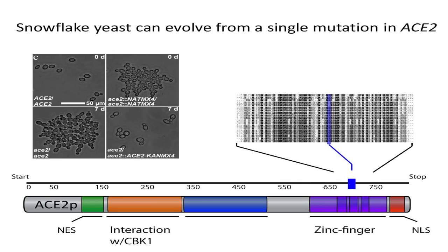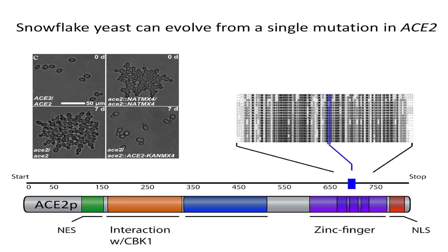When we sequence these cells, we find a single SNP right in the business end of a transcription factor, ACE2, which turns CTS1 on and off. What we think is happening is that this transcription factor is being knocked out by this SNP. We can recapitulate the snowflake yeast phenotype by simply knocking out ACE2 in our wild-type ancestor, and critically, we can take experimentally evolved snowflake yeast, put a functional copy of ACE2 back in, and get unicellular yeast again — which is a very handy experimental technique.